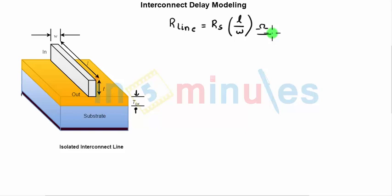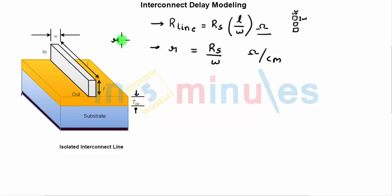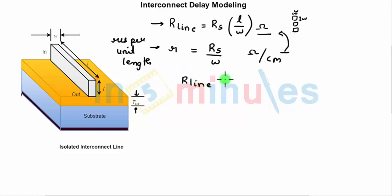Now we need to define the resistance per unit length. Let's call it small r, which is nothing but RS divided by W. The unit of this is ohms per centimeter. R_line from input to output is sheet resistance into L by W, where L by W is the number of squares with dimensions W by W. Resistance per unit length is sheet resistance divided by W, so R_line equals small r into L.